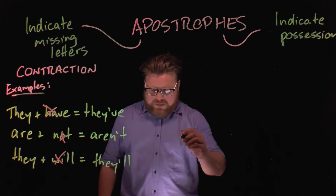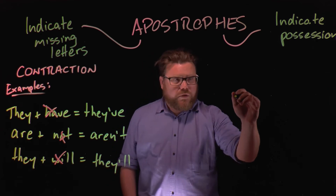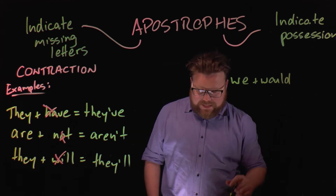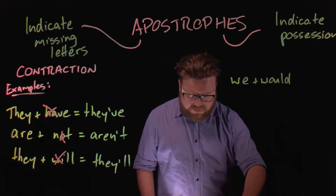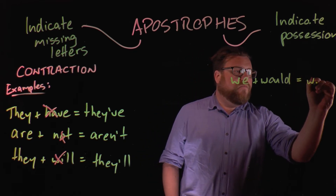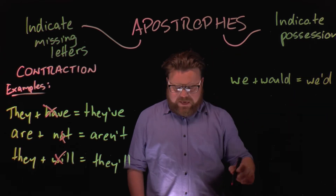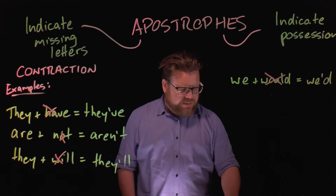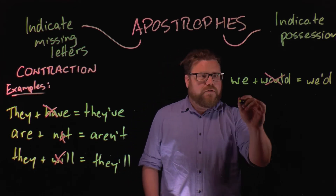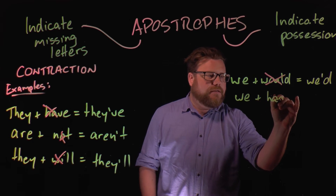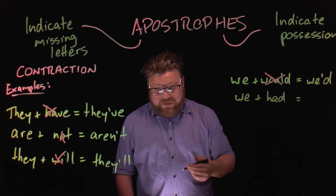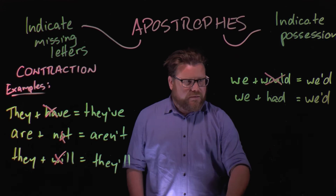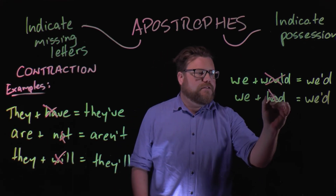Sounds a bit confusing, but what I mean is: if you had the example of 'we' plus 'would,' as in 'we would love to come to the movies with you,' the contraction would be 'we'd.' In that case, you've cut out all four letters and just ended up with 'we'd.' But of course you could also have 'we' plus 'had,' like 'we'd better hurry if we want to come to the movies with you.' That contraction looks the same — 'we'd' — but in this case it would have only cut out two letters.